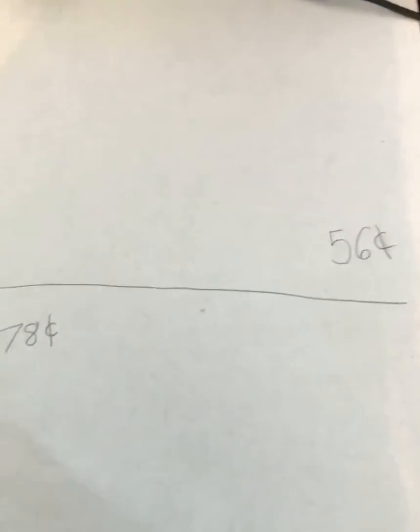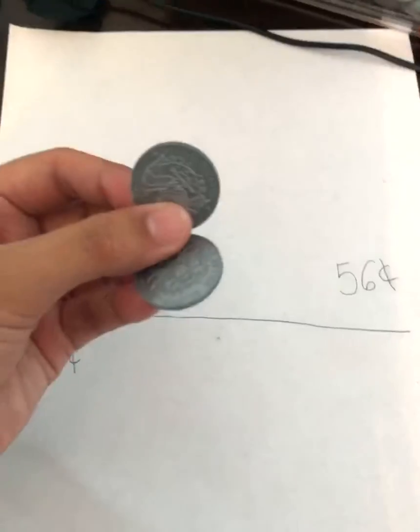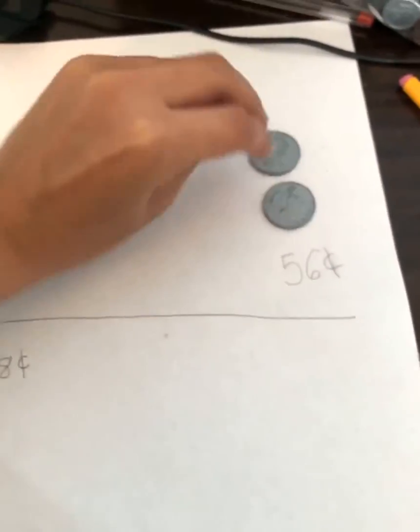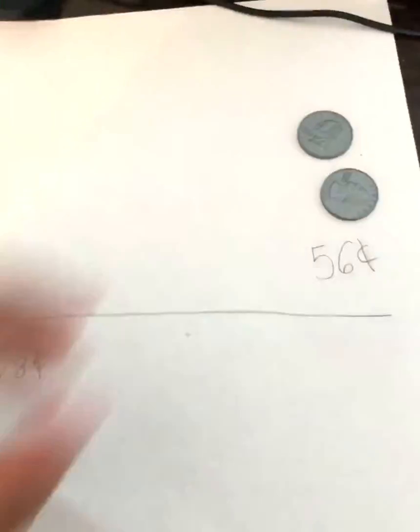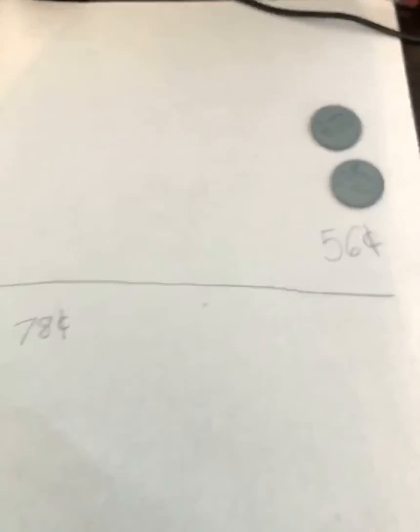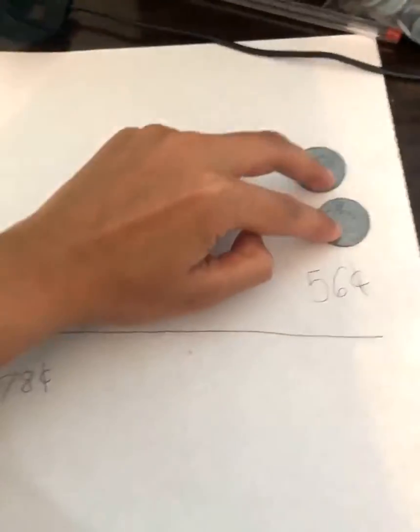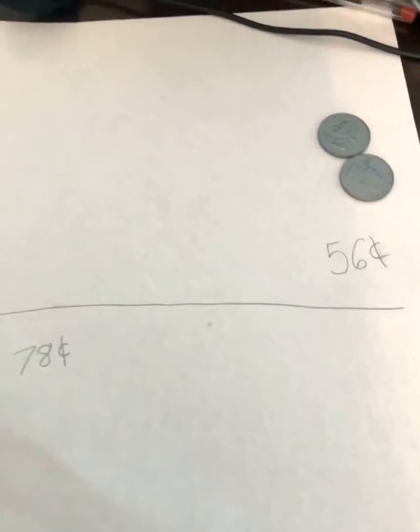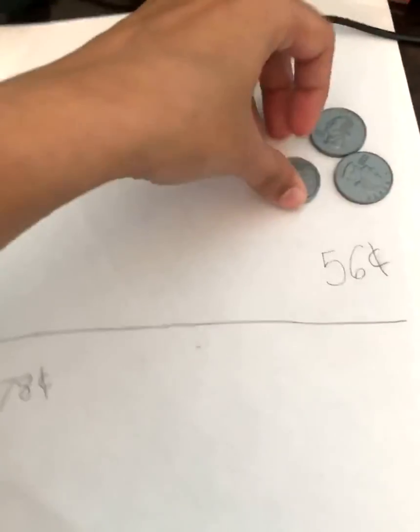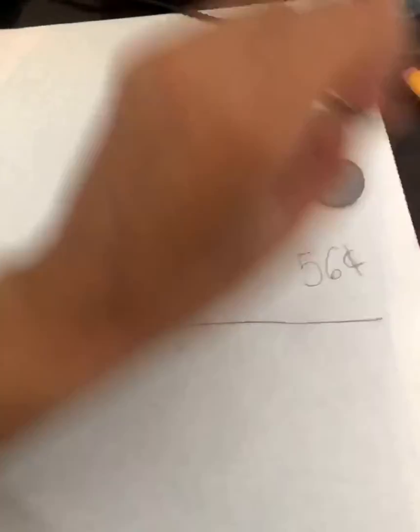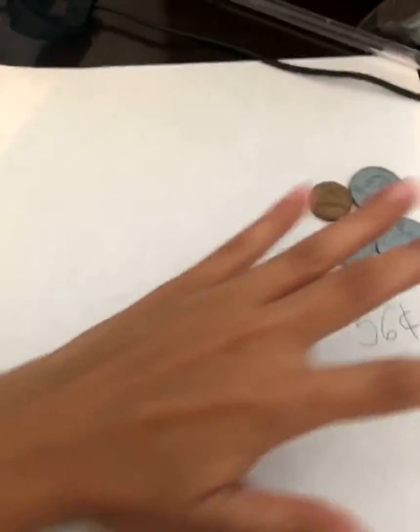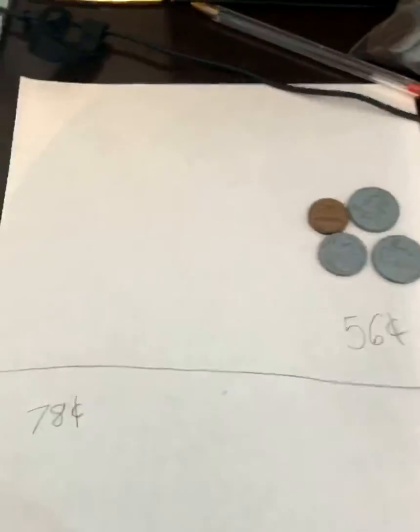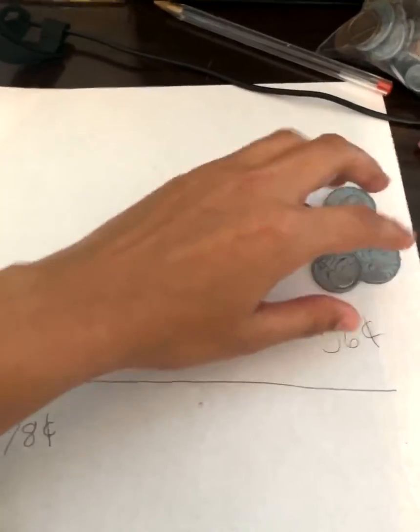My first way to make 56 is to get two quarters. I use that because the quarter has the largest amount. Two quarters make 50. Now I'm going to get a nickel to make 55, then a penny to make it 56. That is four coins that I need: 50, 55, 56.